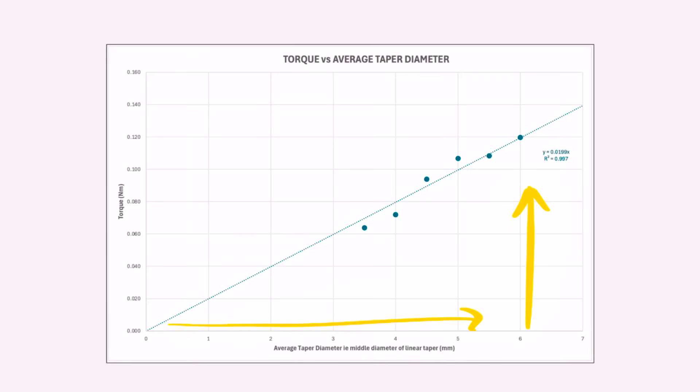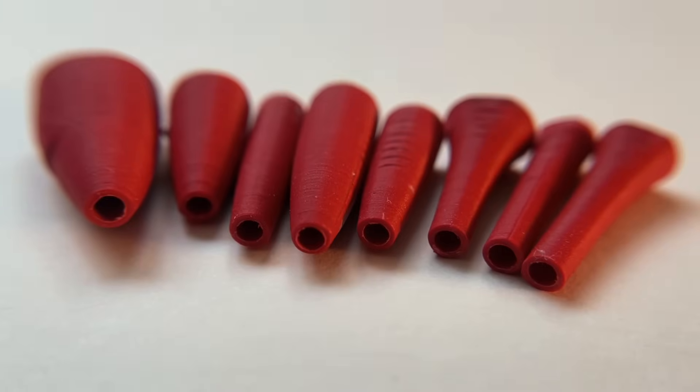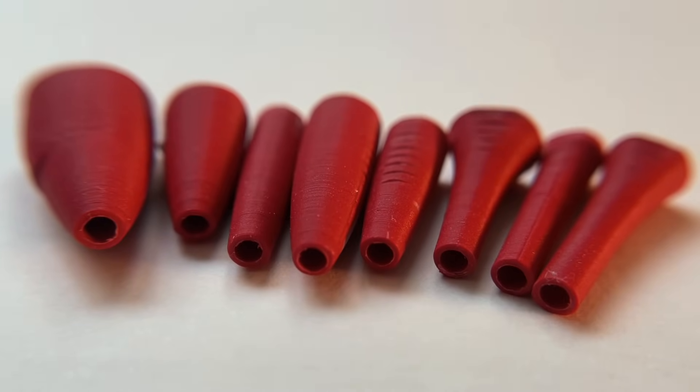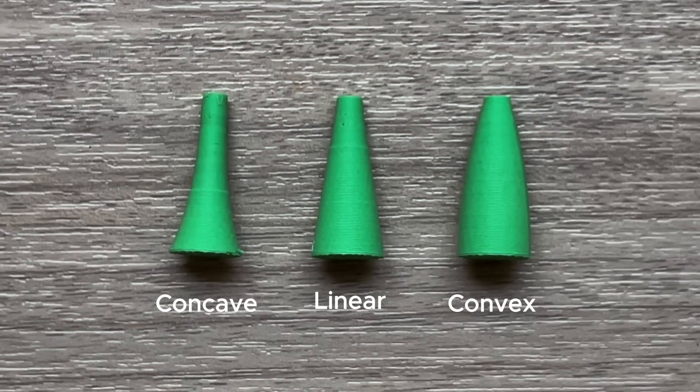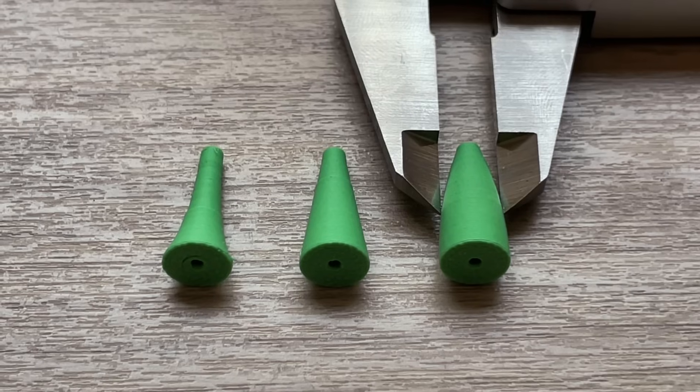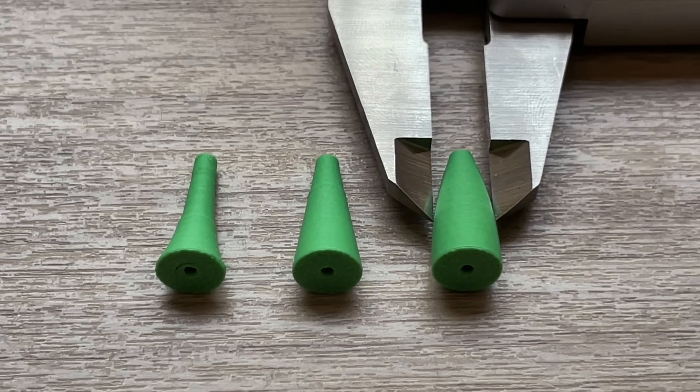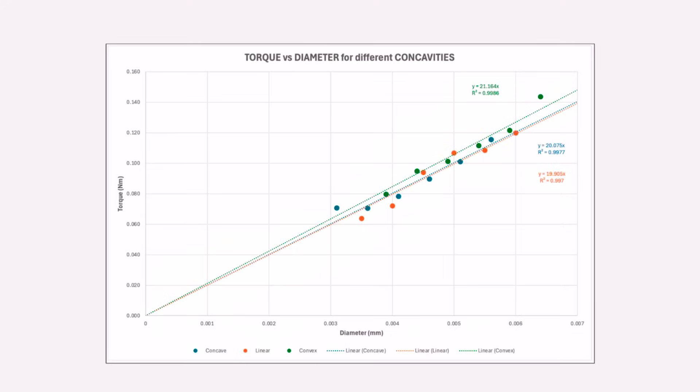But, these are boring linear tapers. What about something more interesting like a concave or convex grip? Being careful to compare the middle diameters of the grips instead of their overall tapers, I repeated the experiment. Here are the results. It's very close, but it looks like the convex grips have a slight edge over the other two.